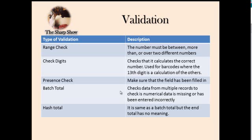A present check is really easy — it just makes sure that a field has actually been filled in. You get a prompt saying you need to complete this field; we've all seen that. Batch total is something people find more confusing. It checks whether numerical data is missing or has been entered incorrectly by calculating the total of all values in a batch. If the numbers don't add up to the expected total, it throws the batch back and the user has to check.